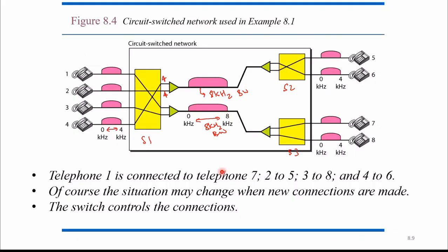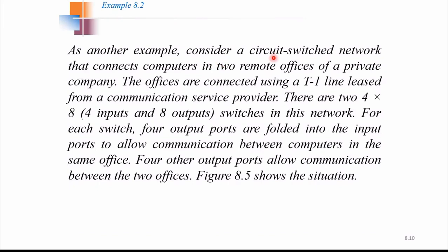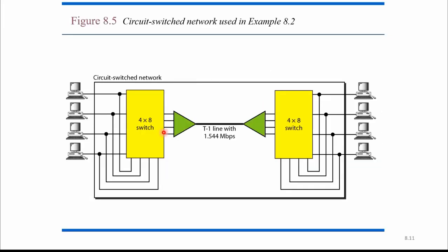That was the basic example of a circuit switched network. Another example is given for a circuit switched network that connects computers in two remote offices of a private company. Office one has four computers and office two has eight computers. They are connected through a switch — a four-by-eight switch, meaning four inputs and eight outputs. So four inputs come in and eight outputs go out.